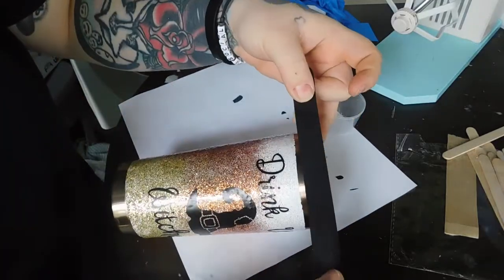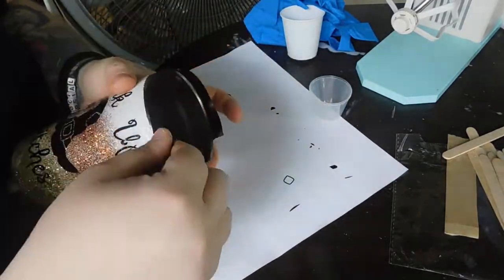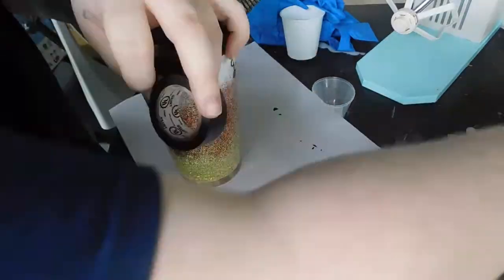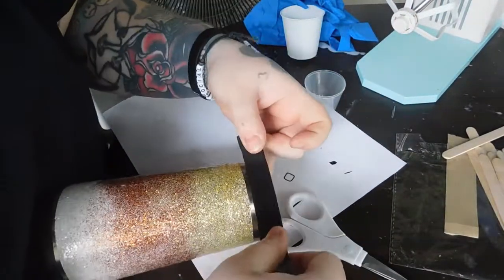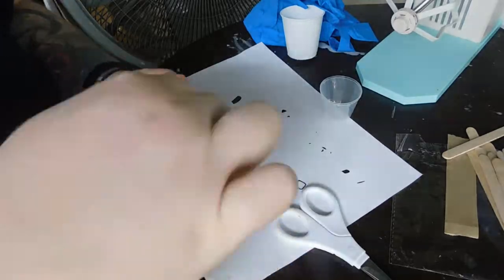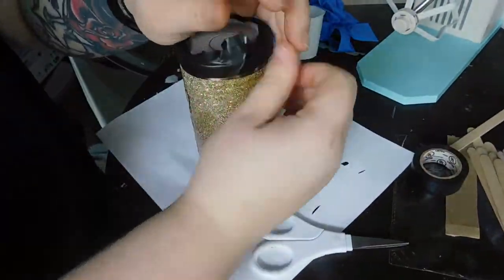So here I am—I'm gonna put my black electrical tape. I'm gonna do it a little bit away from it so it gives me a little lip so it seals all the glitter and design and stuff on the cup.